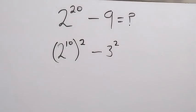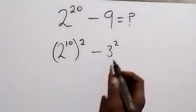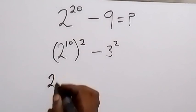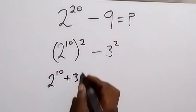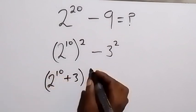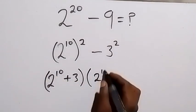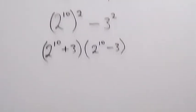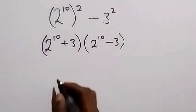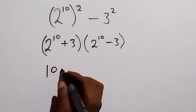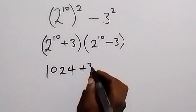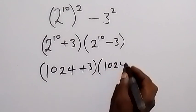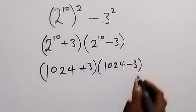This follows the difference of two squares, which we can factorize. It becomes 2 raised to power 10 plus 3, multiplied by 2 raised to power 10 minus 3. From here, we can write 2 raised to power 10 as 1024, so we have 1024 plus 3, and 1024 minus 3.